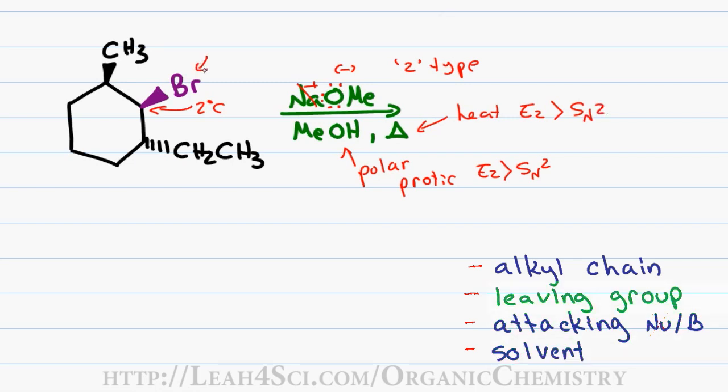Last we check the leaving group and verify that bromine is a good leaving group and so any type of reaction can take place. Putting all these components together, we know we have a two-type reaction and since E2 is favored over SN2, this will indeed undergo a beta elimination reaction.